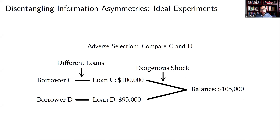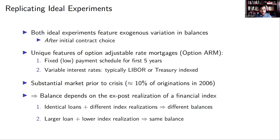For adverse selection, imagine borrowers C and D who took different contracts ex-ante — borrower C took higher leverage. As a result of an exogenous shock, they now have the same balance. If two borrowers now have identical balance ex-post but selected different contracts ex-ante, observing higher defaults among borrower C even with the same balance suggests selection — that borrower C entered into this contract with different propensities for default. This gives you a flavor of the identification strategy here, approximating this ideal experiment with option-ARM mortgages.